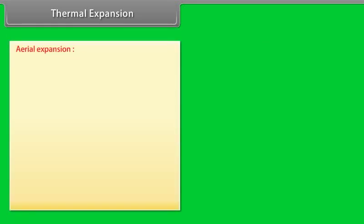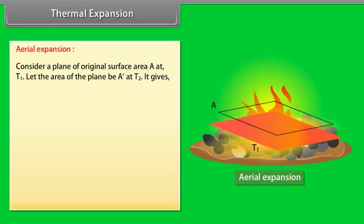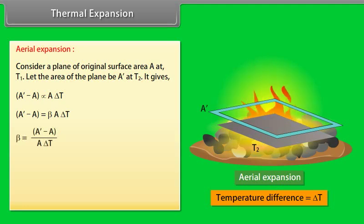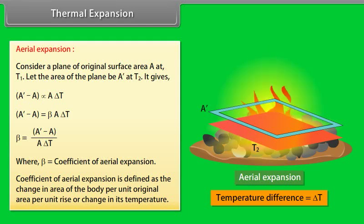Aerial expansion: Consider a plane of original surface area A at temperature T1. Let the area be A dash at temperature T2. It gives: A dash minus A is directly proportional to A delta T, or A dash minus A is equal to beta A delta T. The value of beta equals (A dash minus A) upon A delta T, where beta is the coefficient of aerial expansion, defined as the change in area per unit original area per unit rise in temperature.